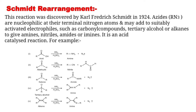Here are a few examples: An acid reacted with HN3 and H2SO4 will form amine as the main product. An aldehyde reacted with HN3 and H2SO4 will form nitrile. A ketone reacted with HN3 and H2SO4 will form amide. A tertiary alcohol or alkene reacted with HN3 and H2SO4 will form amine as the main product.